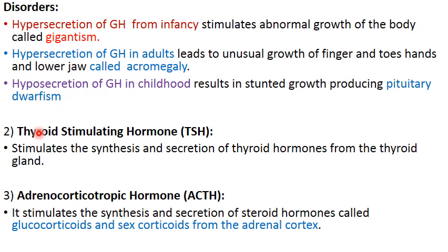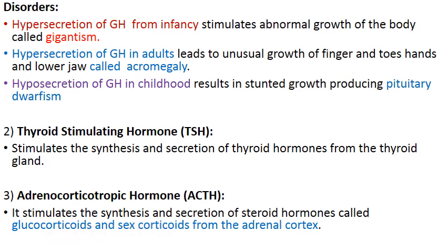The next pituitary hormone is thyroid stimulating hormone (TSH), which, as the name suggests, stimulates the thyroid gland — specifically the synthesis and secretion of thyroid hormones from the thyroid gland. Next is adrenocorticotropic hormone (ACTH), which goes to the adrenal cortex — the outer part of the adrenal glands located at the tip of the kidneys — and stimulates the synthesis and secretion of steroid hormones called glucocorticoids and sex corticoids.